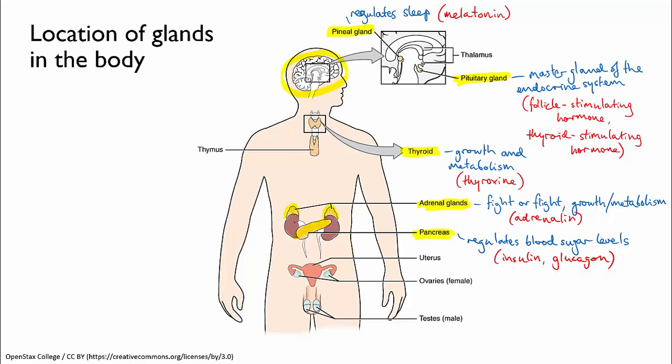And the gonads, or sex glands. In men, these are the testes, and in women, the ovaries. And they produce sex hormones like testosterone and estrogen, which affect the growth and development of sexual organs.